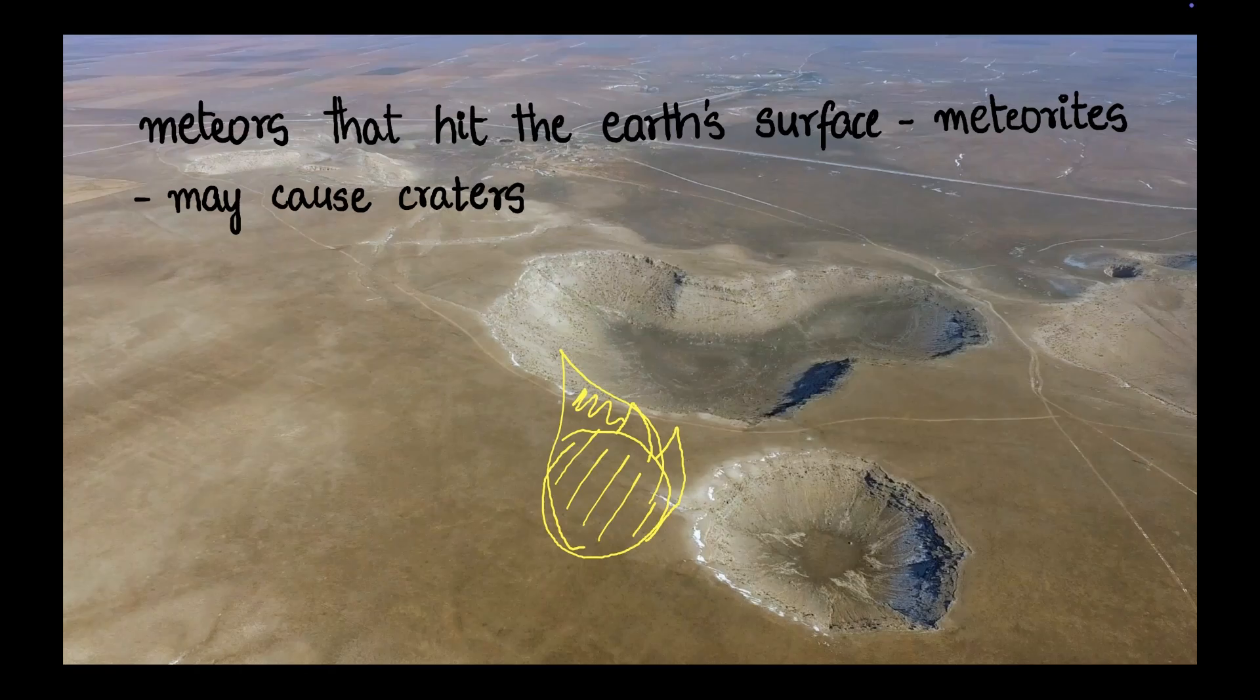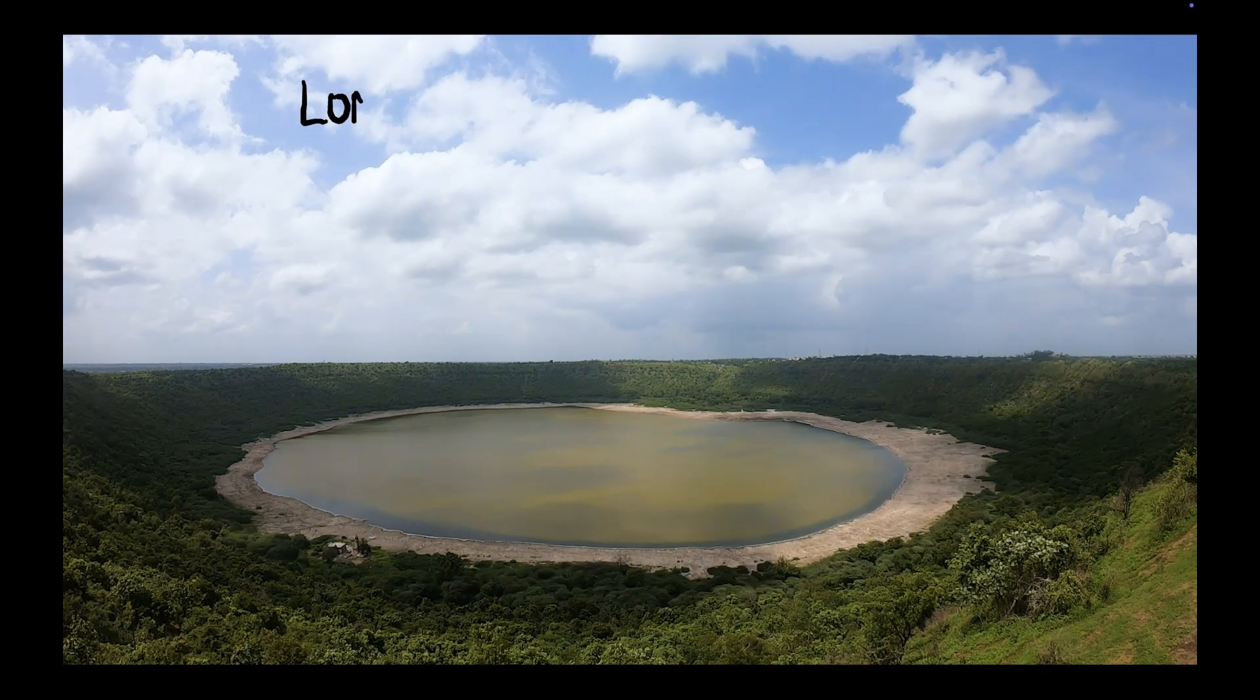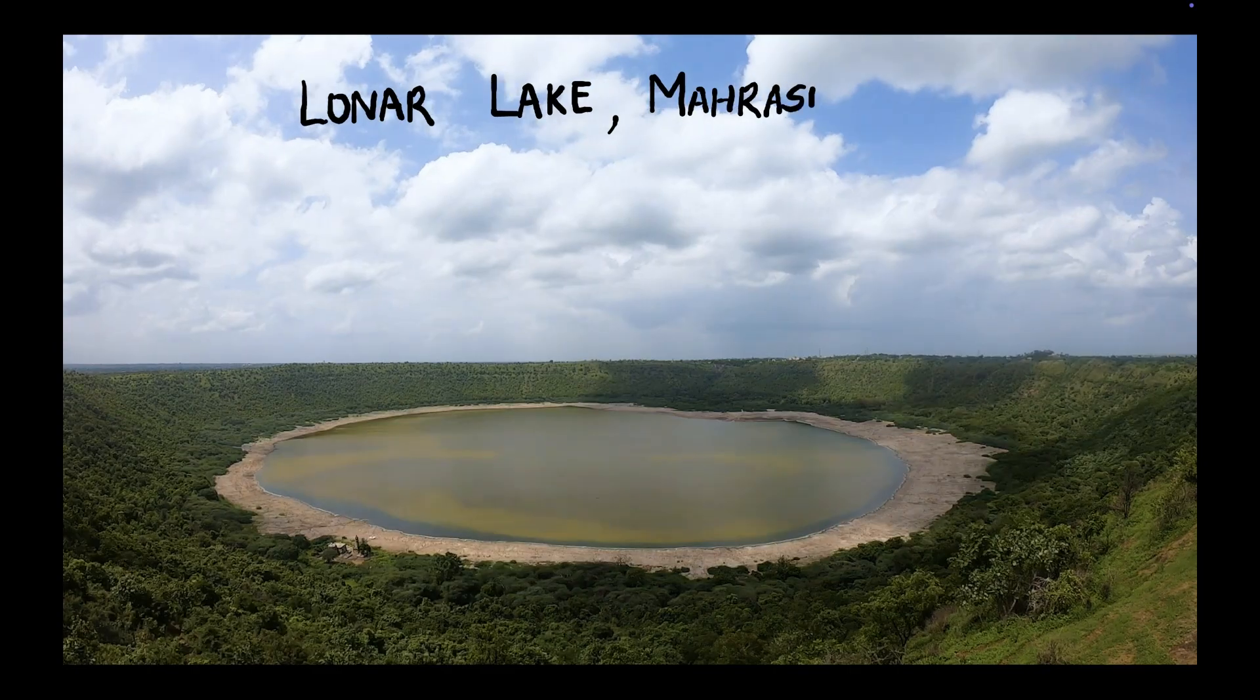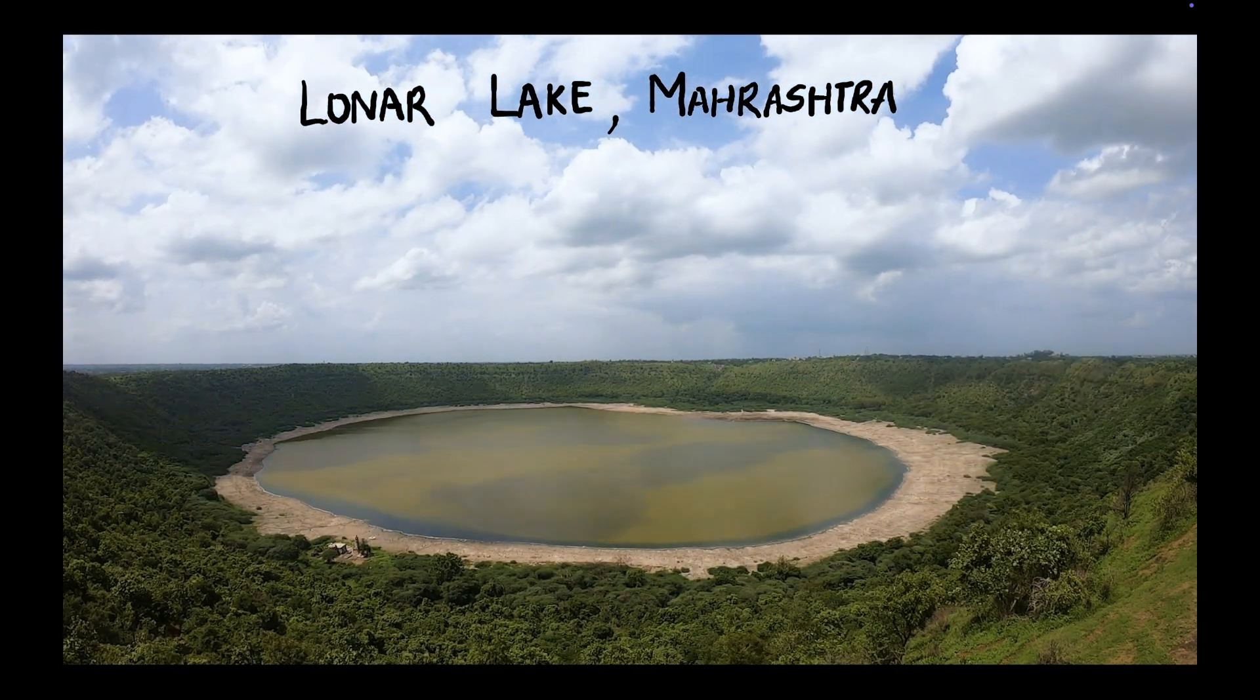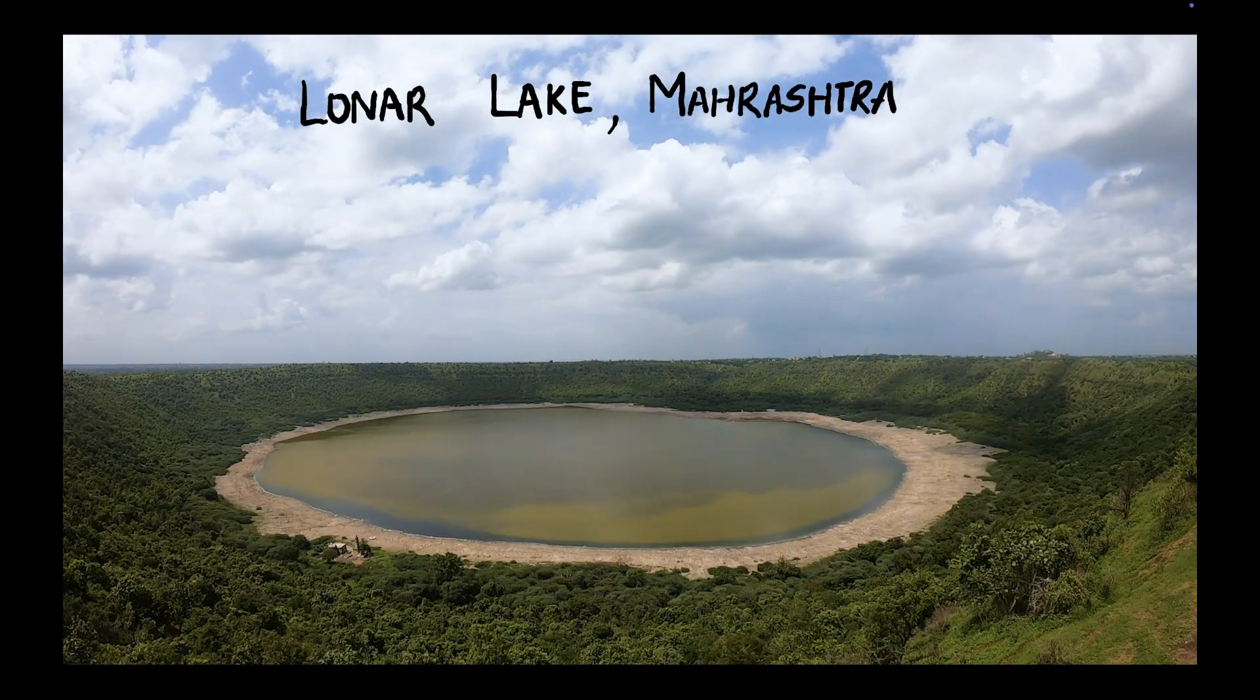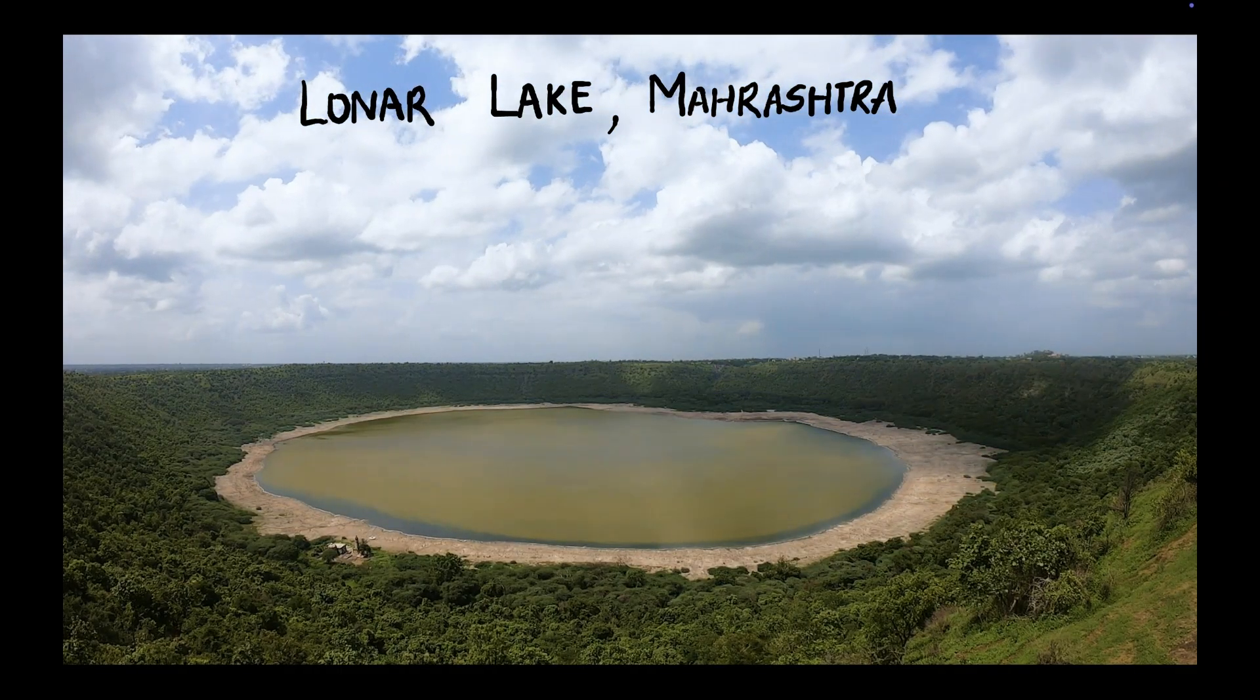An example of a meteorite crater is Lonar Lake in Maharashtra. This crater was formed by a meteorite long ago, thousands of years ago, and then water at some point flowed in and it got filled up, and we have a lake because of this. Interesting, isn't it? Okay, that's it for this video. Thank you.